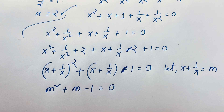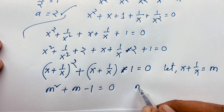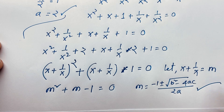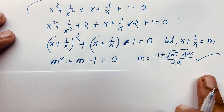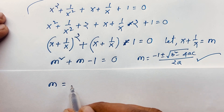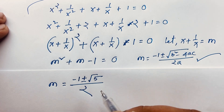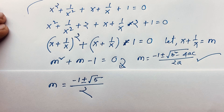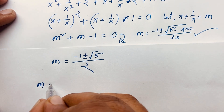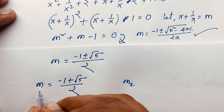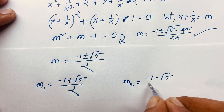Applying the quadratic formula m equals (minus b plus or minus square root of b² minus 4ac) over 2a, we find m equals (negative 1 plus or minus square root of 5) over 2. So m₁ equals (minus 1 plus square root 5) over 2 and m₂ equals (minus 1 minus square root 5) over 2.